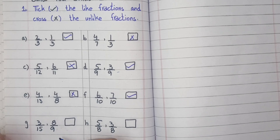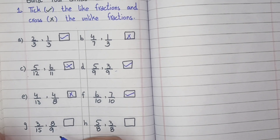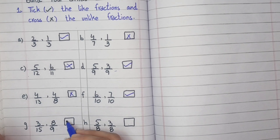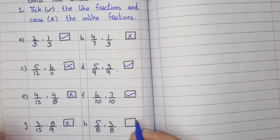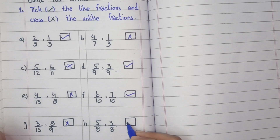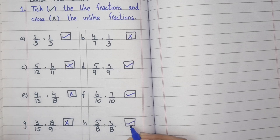Three by fifteen and eight by nine — unlike fractions. Five by eight and three by eight — this is a like fraction.